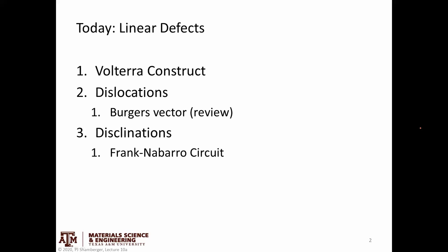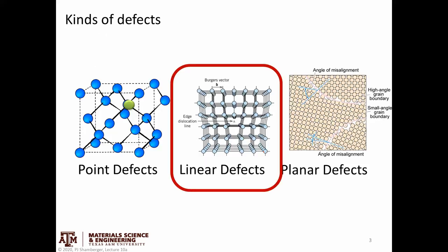Today we're going to keep talking about defects in materials and we're shifting on to think about linear defects. There are going to be a couple videos here, but first we're going to talk about the general Volterra construct — basically a way to visualize and relate all these different kinds of linear defects. Then we're going to talk about the two main classes: dislocations and disclinations. In this video we'll focus just on dislocations and tackle disclinations in the next video.